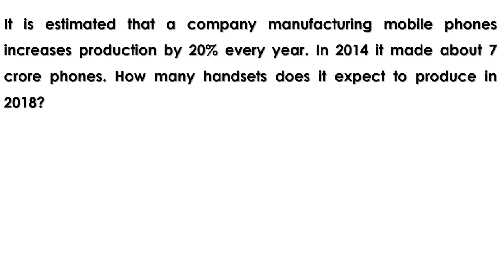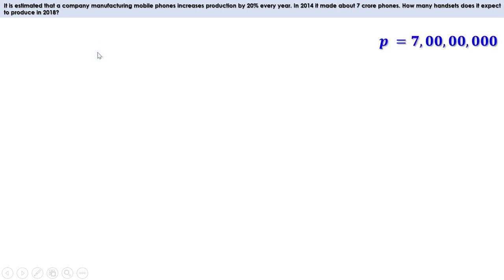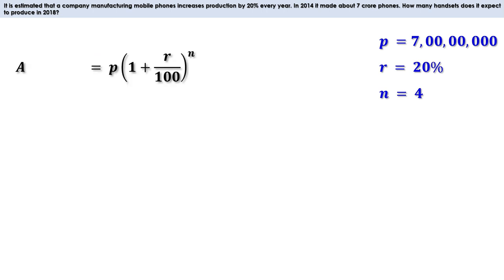Let us take an example. It is estimated that a company manufacturing mobile phones increases production by 20% every year. In 2014 it made about 7 crore phones. How many handsets does it expect to produce in 2018? The company produces 7 crore mobile phones in 2014, so we can consider P as 7 crore. The production increases by 20% every year, that means R is 20%. We have to find the expected production in 2018, that is after 4 years, therefore n = 4.